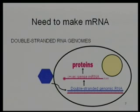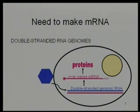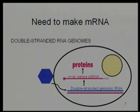Positive sense viruses are those in which the single-strand RNA they package is the same as message, so it can be translated into proteins. The negative sense ones are those in which it's complementary to the message strand and therefore cannot be translated into proteins — it must first be copied into the complementary strand, which will be the plus strand, and then that will be copied into proteins.